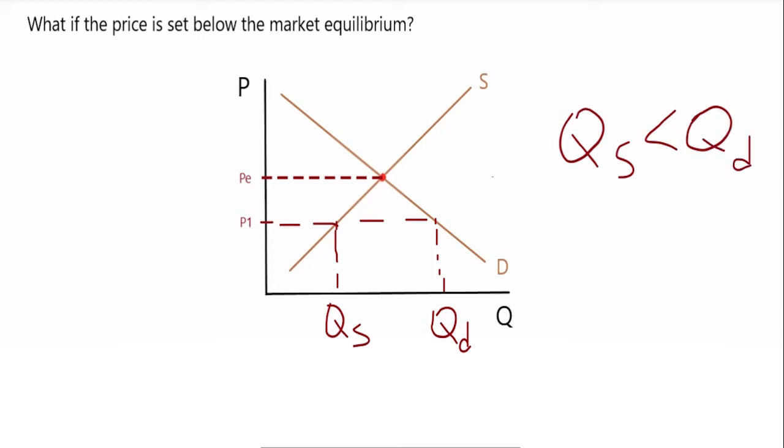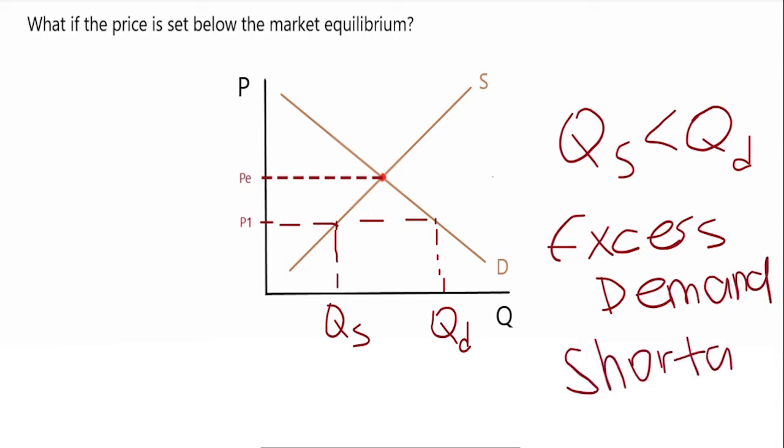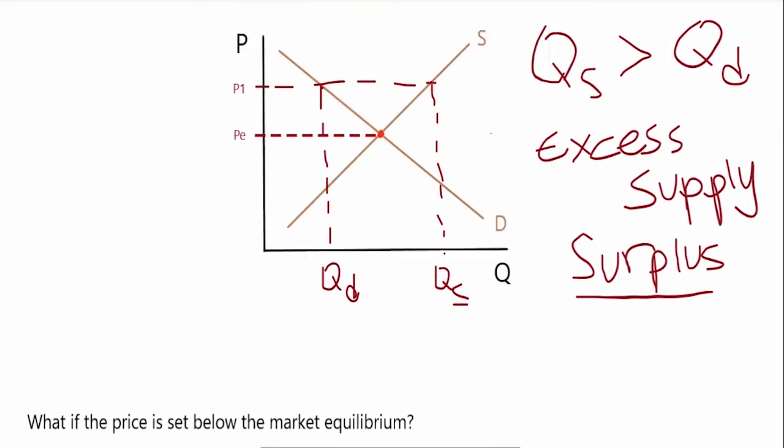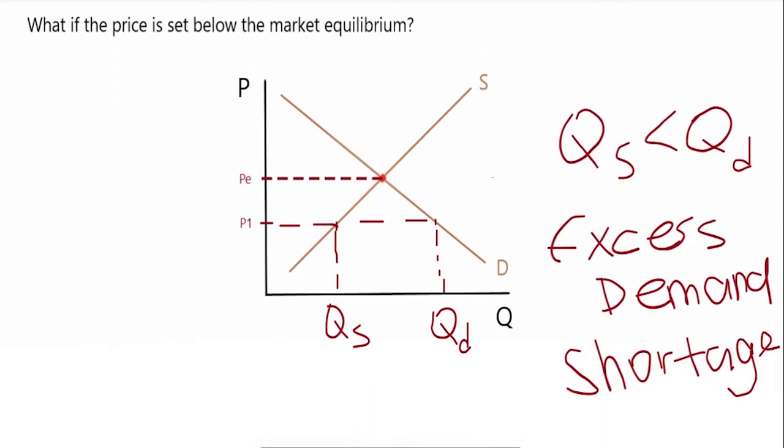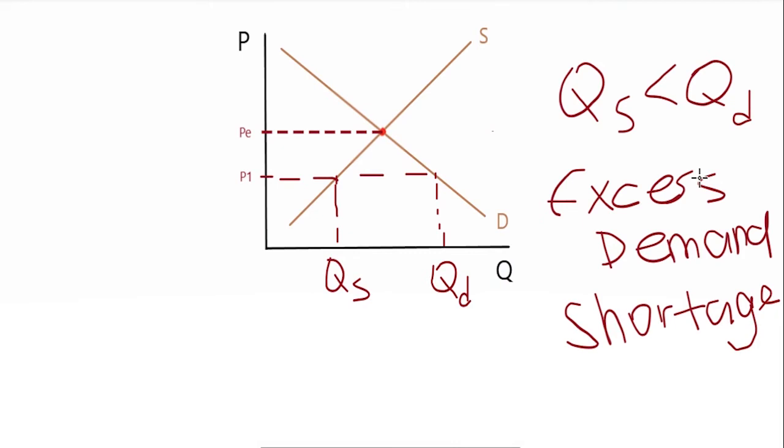So here, you have excess demand. And what does excess demand mean? That means that you are in a shortage of the product that you are producing. And so what I'm trying to get at is that a shortage or a surplus is not necessarily good. Because here you have too much supply, who's going to buy your goods? And then over here with excess demand, you have a lot of people demanding your product, but you're not supplying enough.